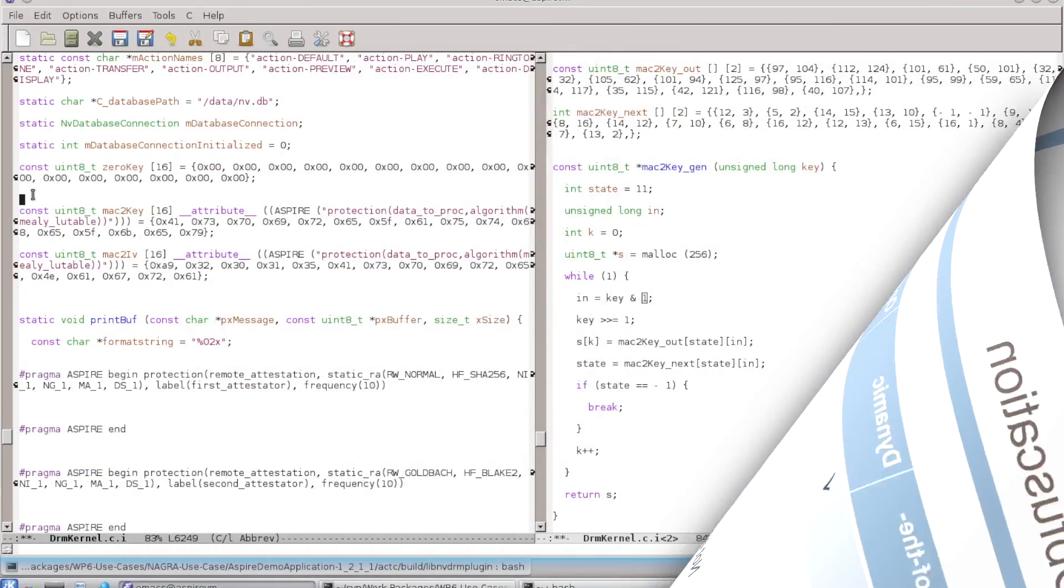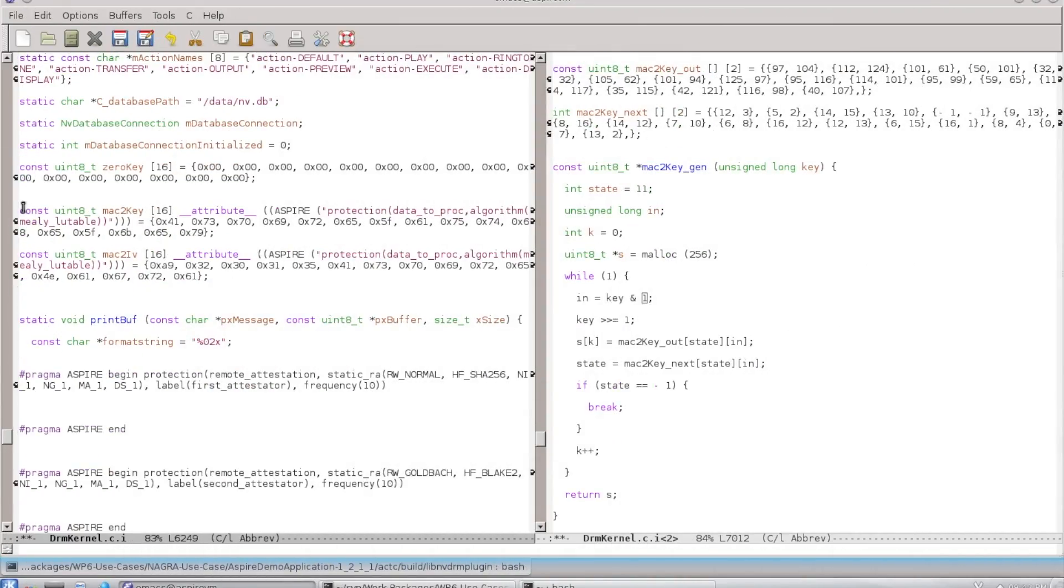So let's look at how this protection is applied to one of our use cases. In this example, we look at the protection that replaces strings or constant data by procedural algorithms. So here in the original program, you see a MAC-2 key that we annotated to mark that it should be protected. Now on the right here, you see the protected program. You see the Mealy automaton being defined.